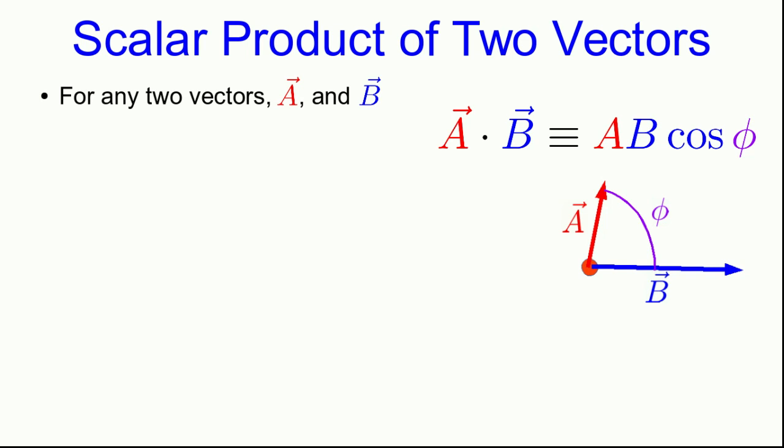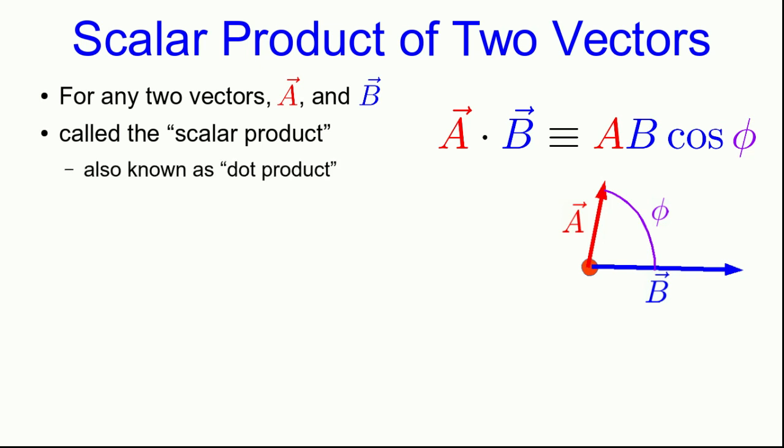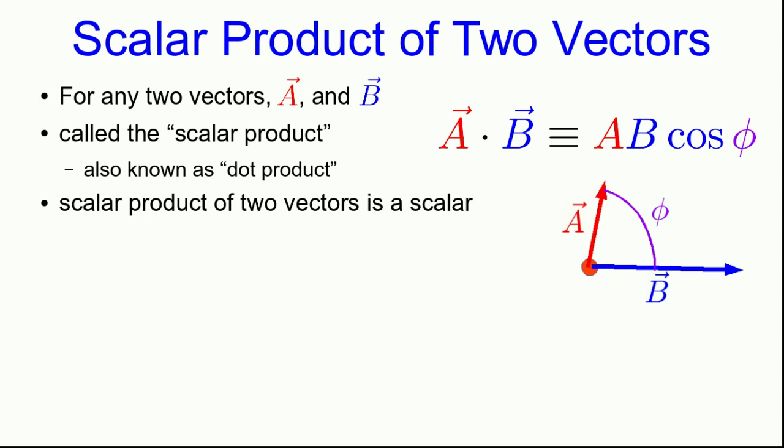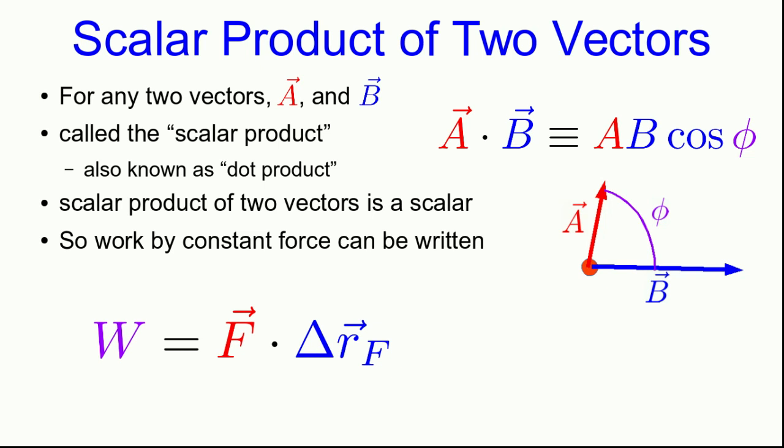This work expression is an example of an operation between two vectors we haven't seen before. We know how to add, subtract, and multiply vectors by scalars, but here we have a type of multiplication of two vectors called the scalar product. For any two vectors a and b, we write a · b and define it as the magnitude of a times the magnitude of b times the cosine of the angle between them. It's also called the dot product, and it results in a scalar. We can therefore write work as the dot product of the force vector with the force displacement vector.